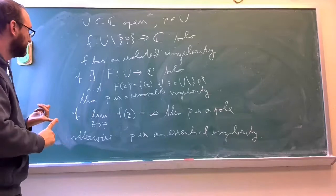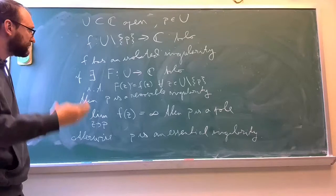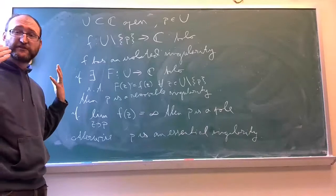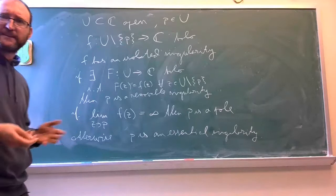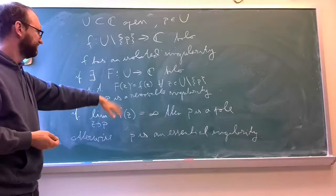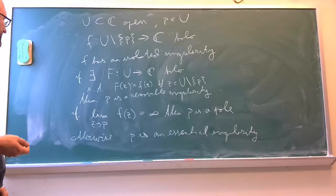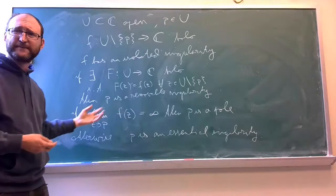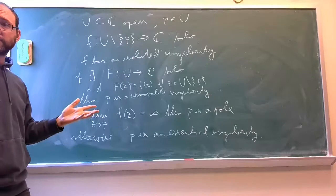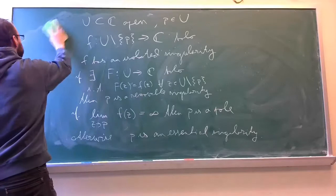So you have a removable singularity if you can actually extend the function through the singularity, a pole if the function goes to infinity, and in all other cases it's an essential singularity. It may seem like we're only catching some cases, but it turns out that either the function has a removable singularity, or the limit exists in the sense of being infinity, or it's going to be really wild. So we don't need too many other definitions.